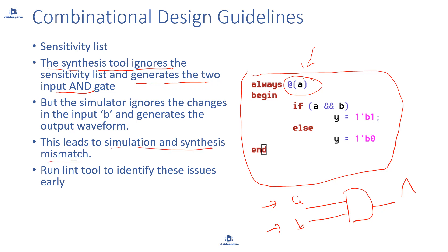You might catch this issue while running simulation, or maybe not. But if you follow the rule that your sensitivity list must be complete and include all signals causing a change in behavior, that mistake can be avoided. This shows why these rules are important. You can catch these issues by writing test benches, but it takes much longer, and sometimes you can still miss them. So it's very important to have these guidelines so you don't skip design issues.